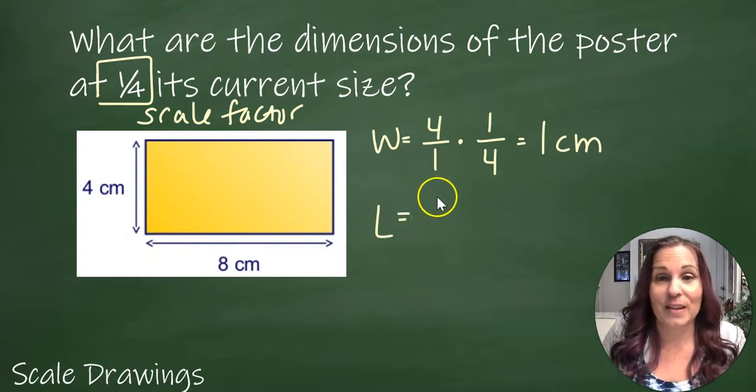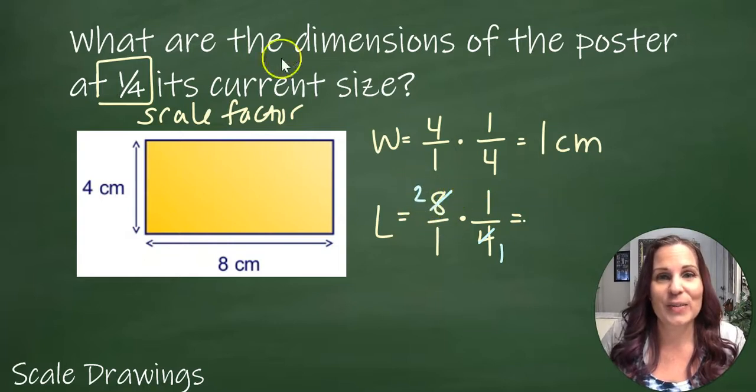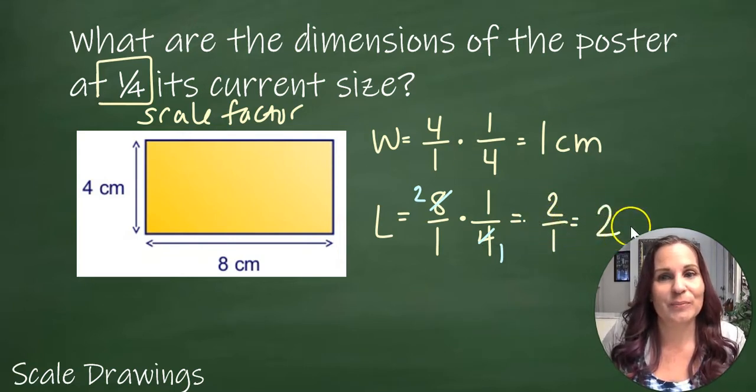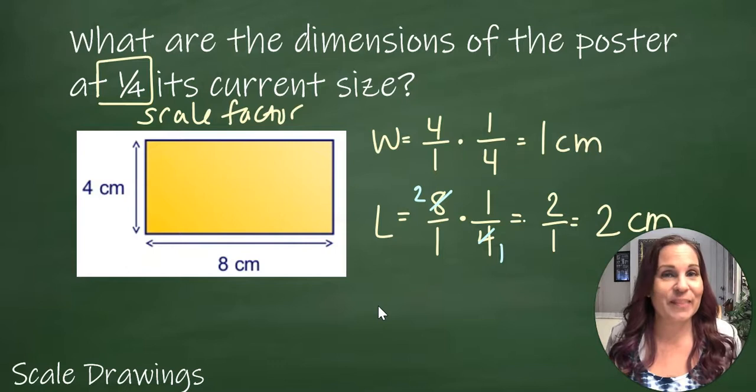My length, I'm going to do the same thing. I'm going to take the given length and multiply it by 1/4 because that's my scale factor. Using a little bit of cross canceling, 4 divided by 4 is 1 and 8 divided by 4 is 2, so that gives me 2 on top and 1 on the bottom, which is 2 centimeters. So that's my new width and my new length.